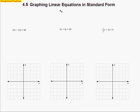Standard form is when we have x and y on the same side. There is an actual form we call standard form where certain rules apply: the coefficient of the x term has to be a positive integer, the coefficient of the y term has to be an integer, and the constant is an integer as well. We're going to see some situations where they're not always in true standard form, but the main thing we're going to see is where x and y are on the same side of the equal sign.